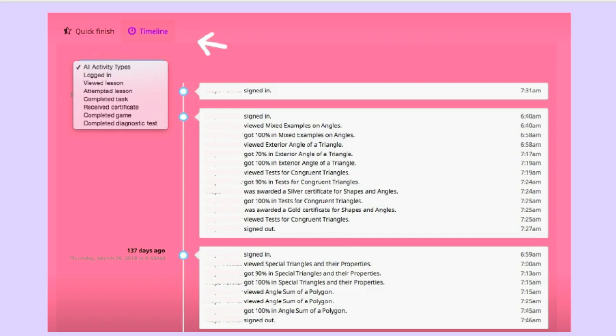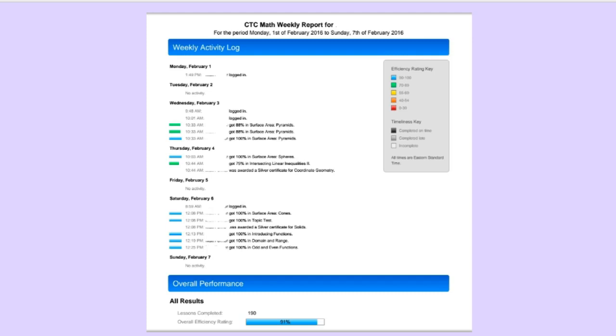You can see everything here, there's times on the right and dates in actual timeline form on the left. You can see when they logged in, when they viewed a lesson, when they attempted a lesson, completed a task. You may have an idea of just what a blessing this feature alone is for a busy mom. It actually allows you to stay totally in the loop with your student studies and their progress and it's really super helpful.